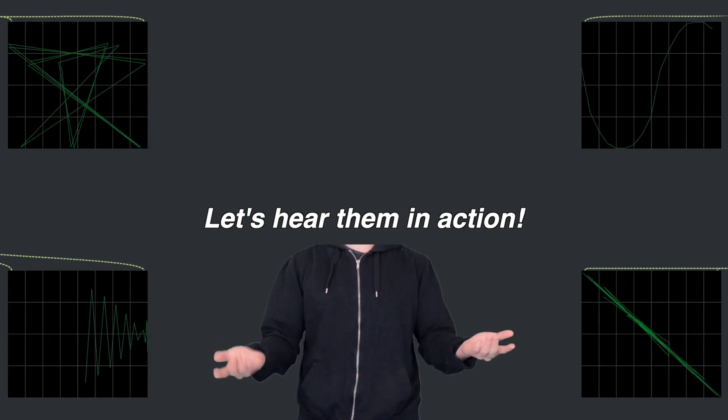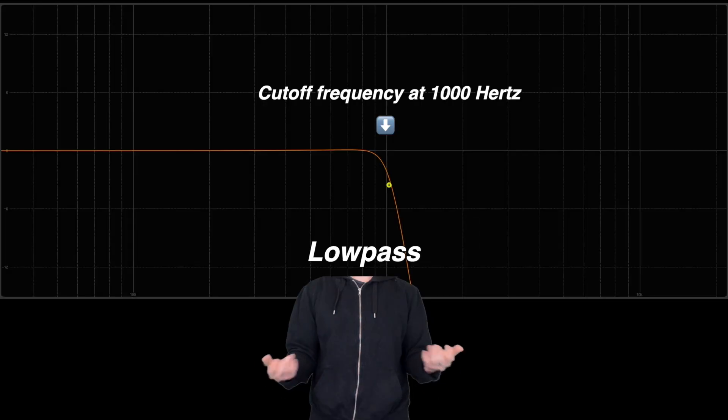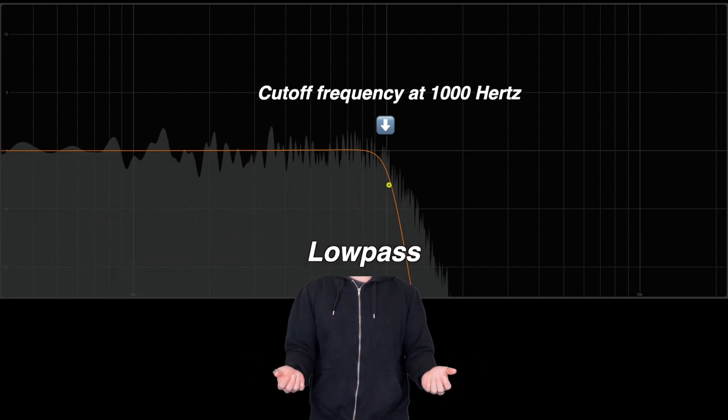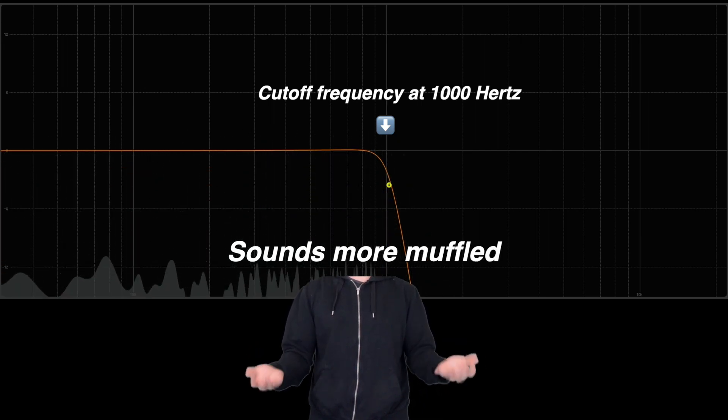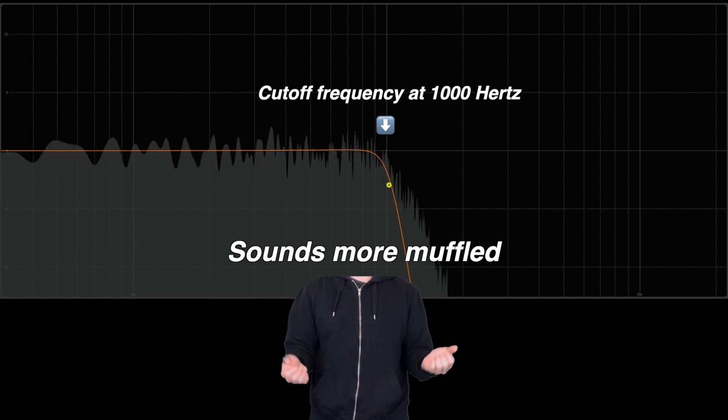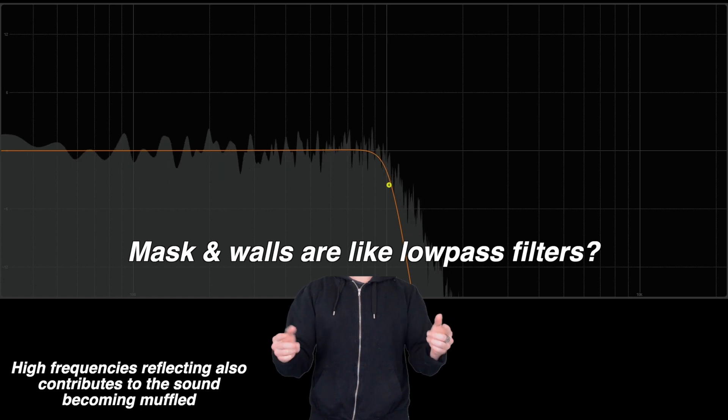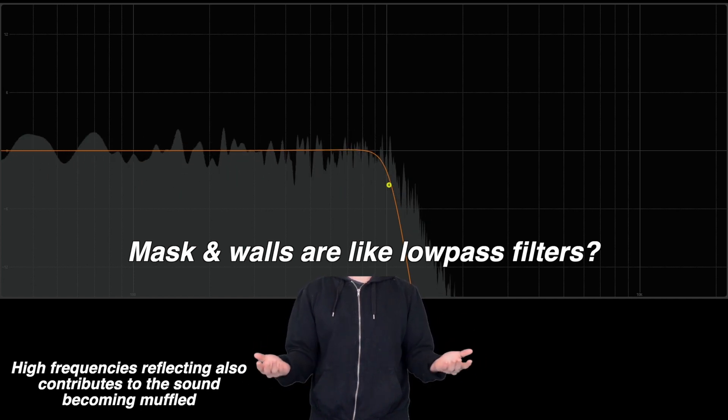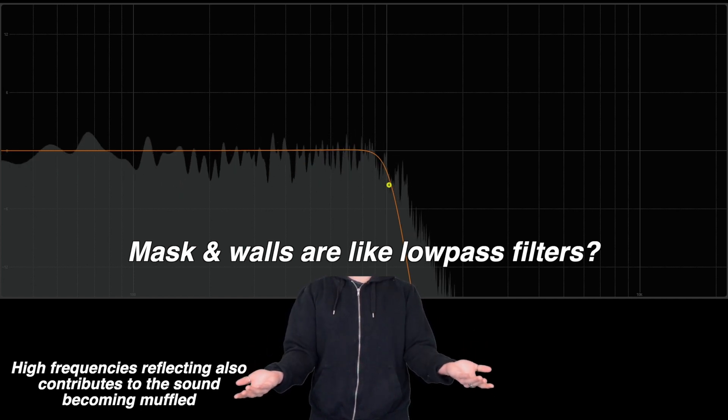Let's use a filter in Ableton. Let's try 1000Hz as the cutoff frequency for this low-pass. As we can hear, the sound is muffled because all the frequency contents above 1000Hz are filtered out. So in a way, your mask or the wall between you and your housemate are a low-pass filter.